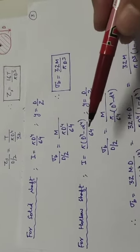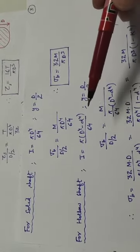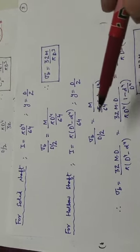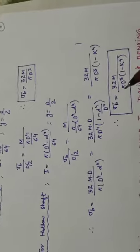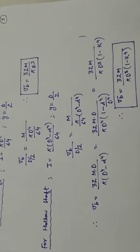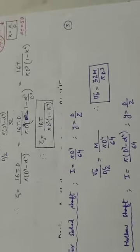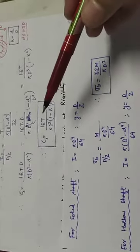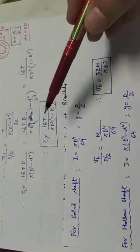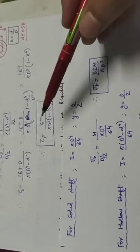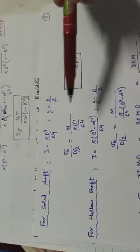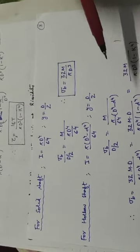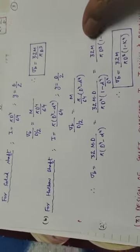For a hollow shaft under bending, I = π(D⁴ − d⁴)/64 and Y = D/2. Substituting, the bending stress formula becomes 32M upon πD³(1 − K⁴). Comparing with the torsion formula, both solid and hollow shaft formulas follow the same structural pattern — 16T/πD³(1 − K⁴) for torsion and 32M/πD³(1 − K⁴) for bending.